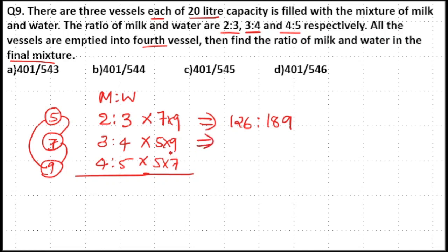The second ratio will become 5 into 9, that's 45. 45 into 3 equals 40 into 3, which is 120, plus 5 into 3 is 15. So 120 plus 15 is 135. And 45 into 4 equals 180. So we have 135 is to 180.